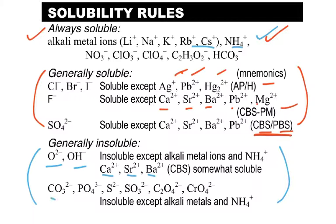Here is a list of compounds that are almost always insoluble, unless paired with the ones that are always soluble, like the alkali metals and ammonium: carbonate, phosphate, sulfide, sulfite, oxalate, and chromate. Those are usually not soluble.